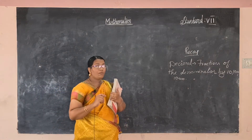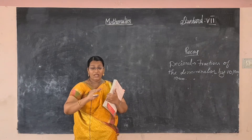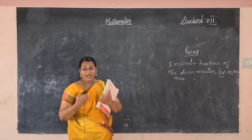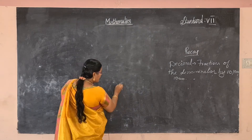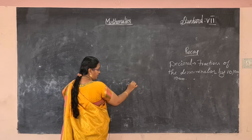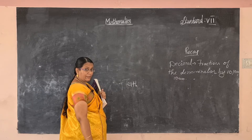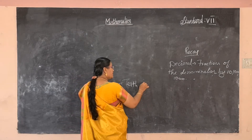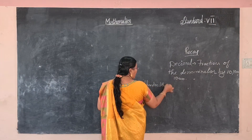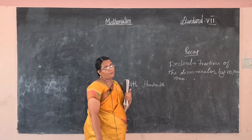The decimal place value chart positions are from the right side of the decimal point. The first place is the tenth place, the second is the hundredth place, next is the thousandth place, and after that the ten-thousandth place.